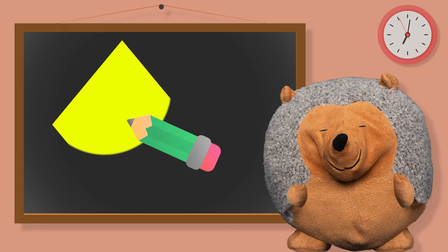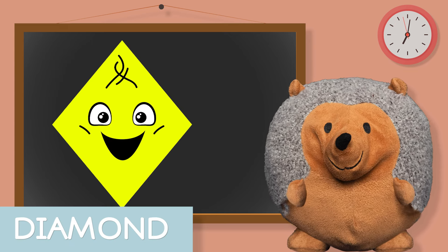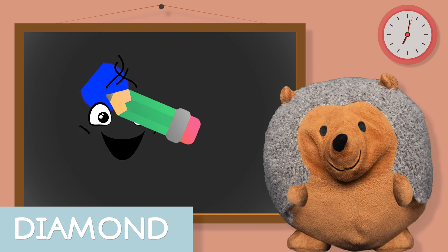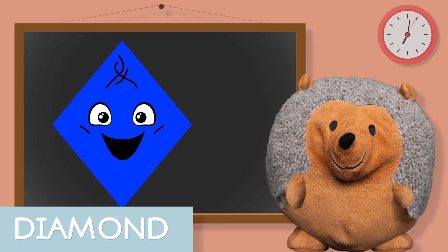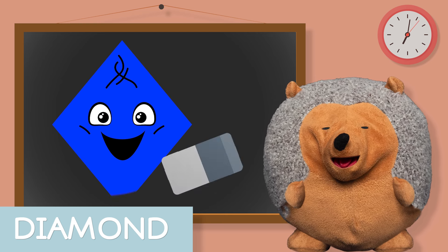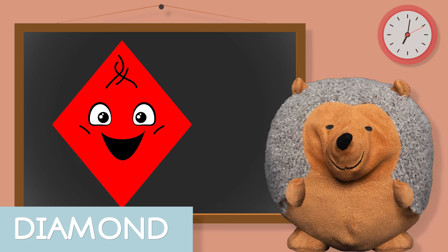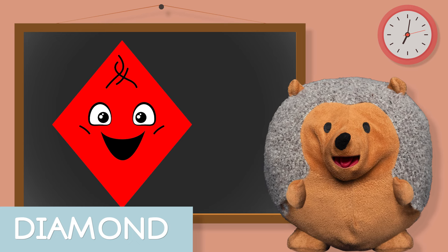Next is a diamond. This diamond is yellow. And this diamond is blue. And the last diamond is a red diamond. So that is what a diamond looks like.